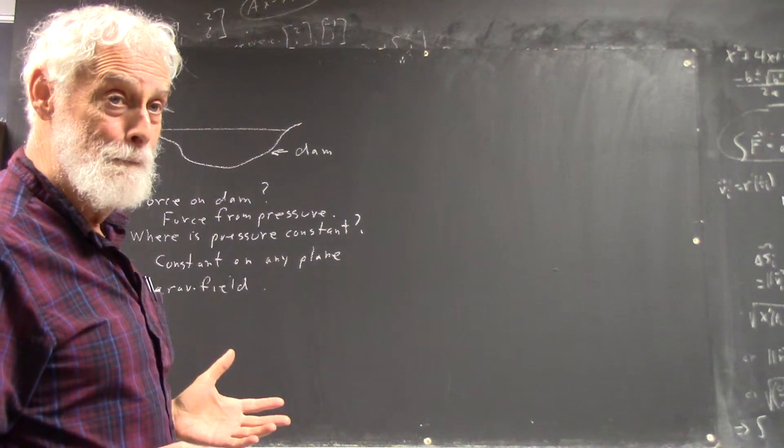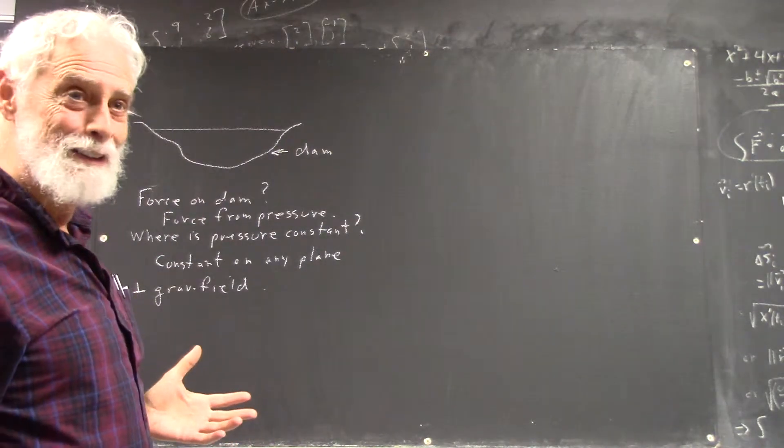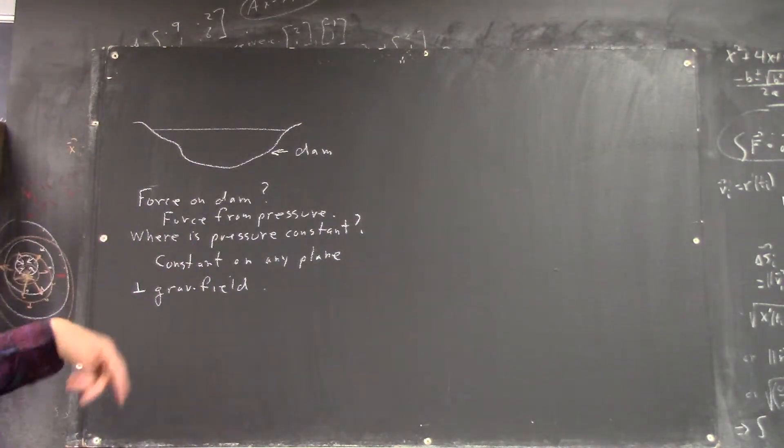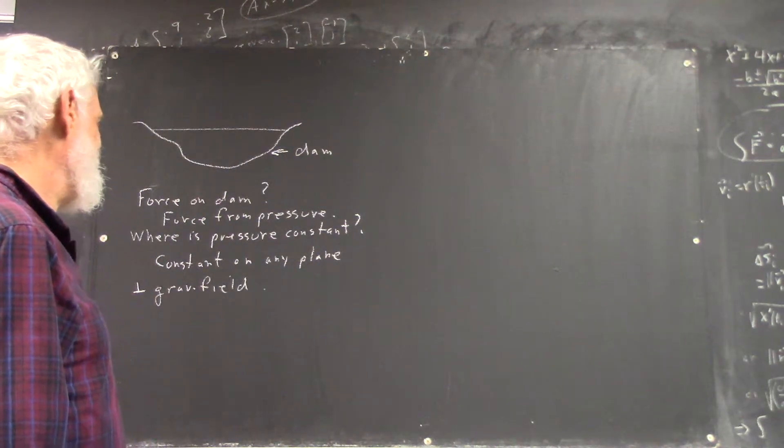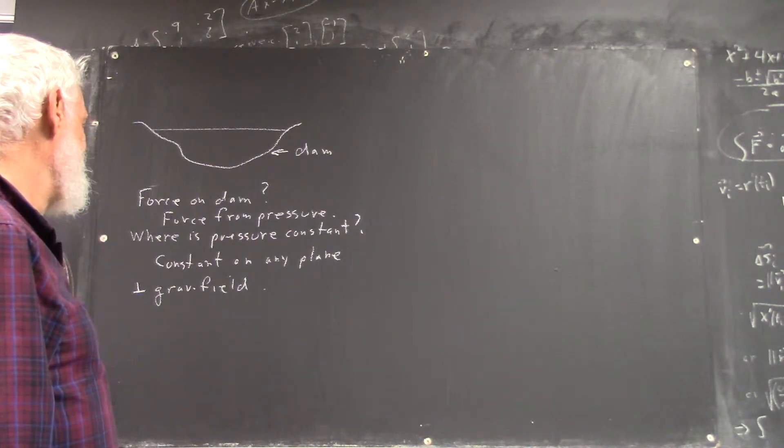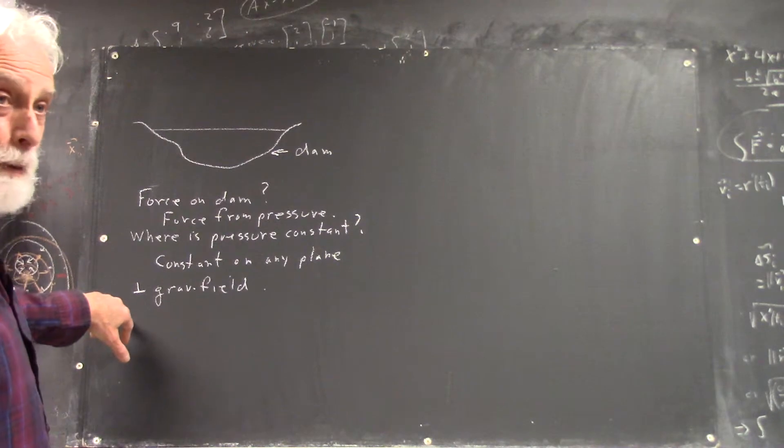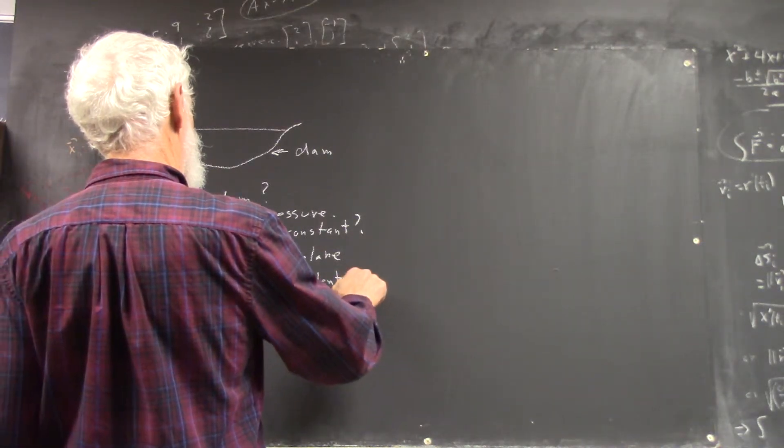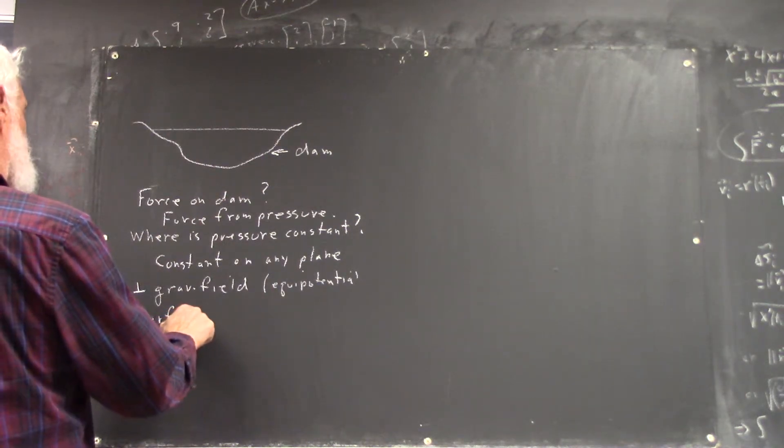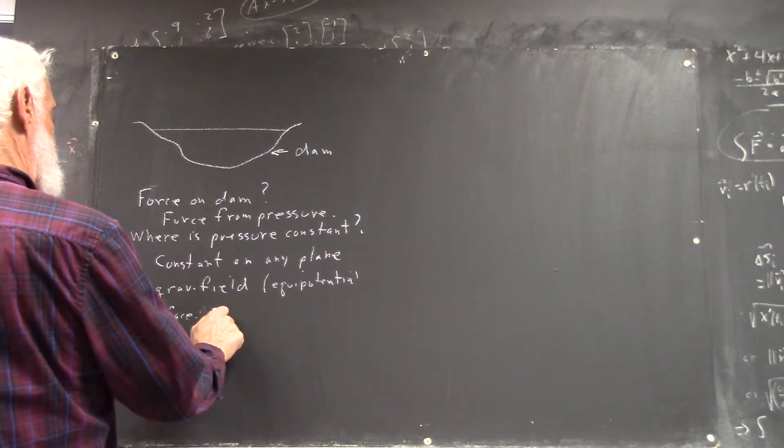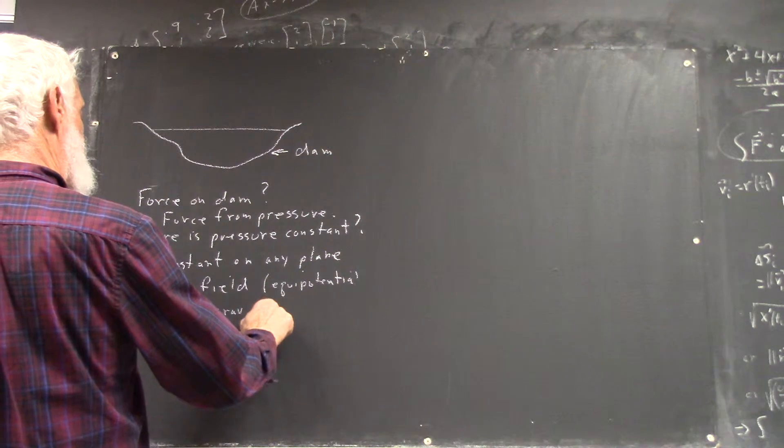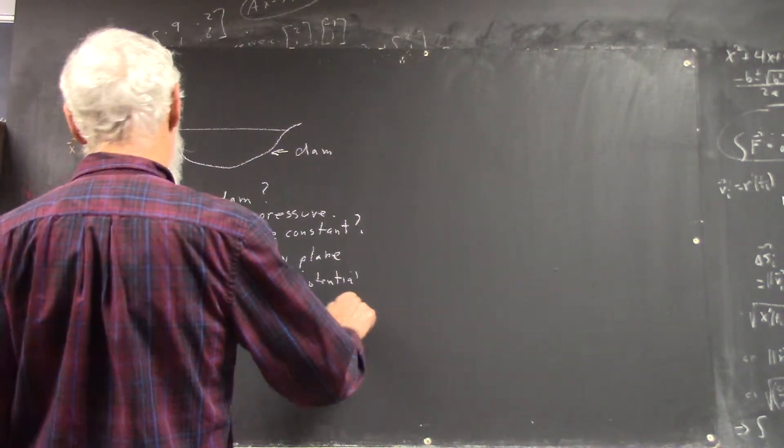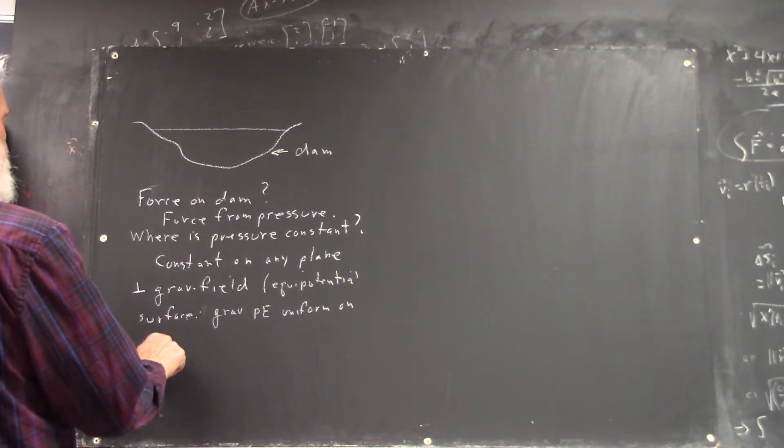Does the Hoover Dam, that's not even high enough that it makes a difference? No. And incidentally, I talked to my brother the other day and told him an interesting story about the Hoover Dam that occurred last month. A constant any plane perpendicular to the gravitational field. And that's called an equal potential surface, an example of an equal potential surface. Gravitational potential energy is uniform on any such plane, right?